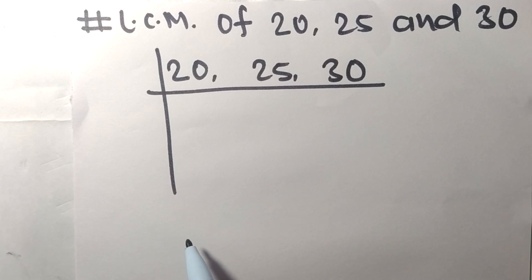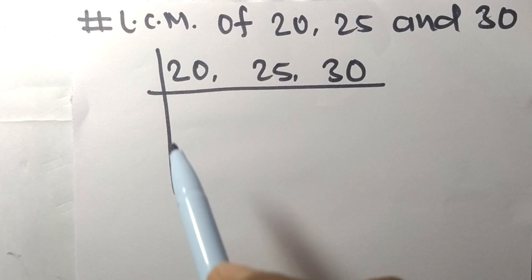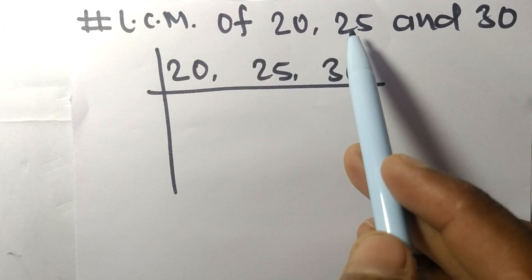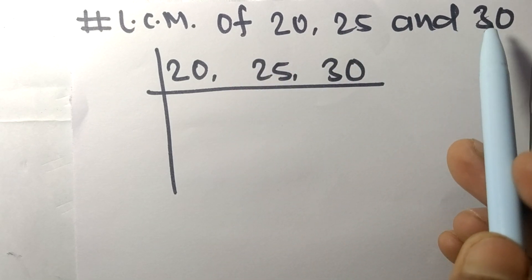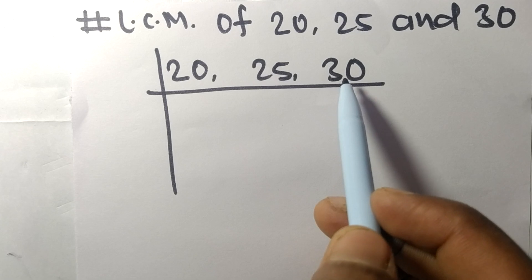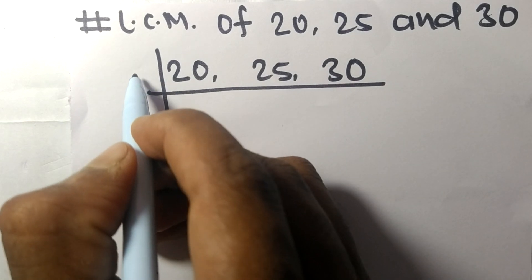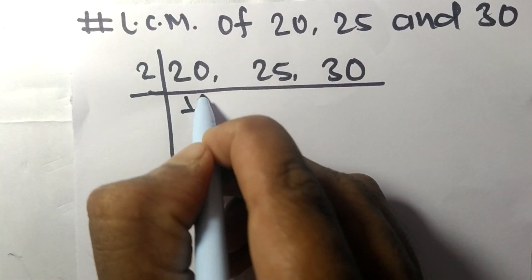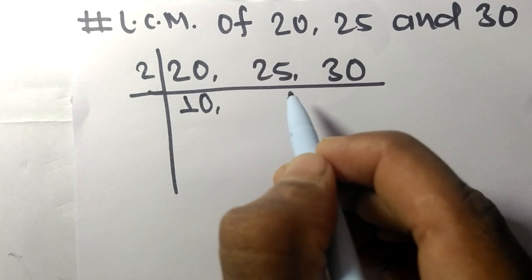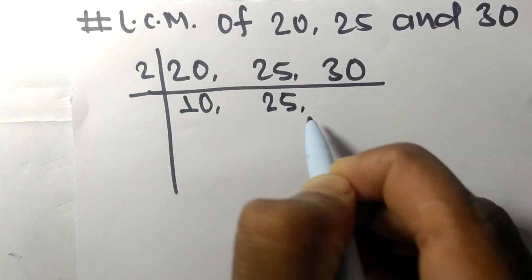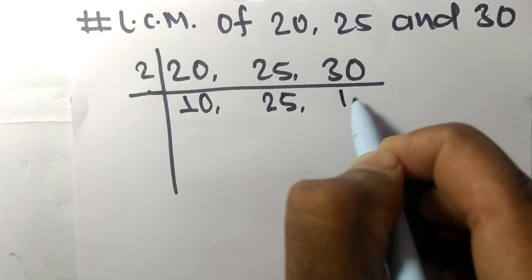Today in this video we shall learn to find the LCM of 20, 25, and 30. 20 and 30 are divisible by 2, so 2 times 10 means 20, 25 is not divisible so it stays the same, and 2 times 15 means 30.